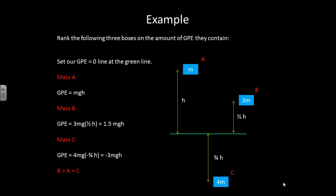So for this particular case, we can rank them: the biggest, the most gravitational potential energy is B, then A, and then C.